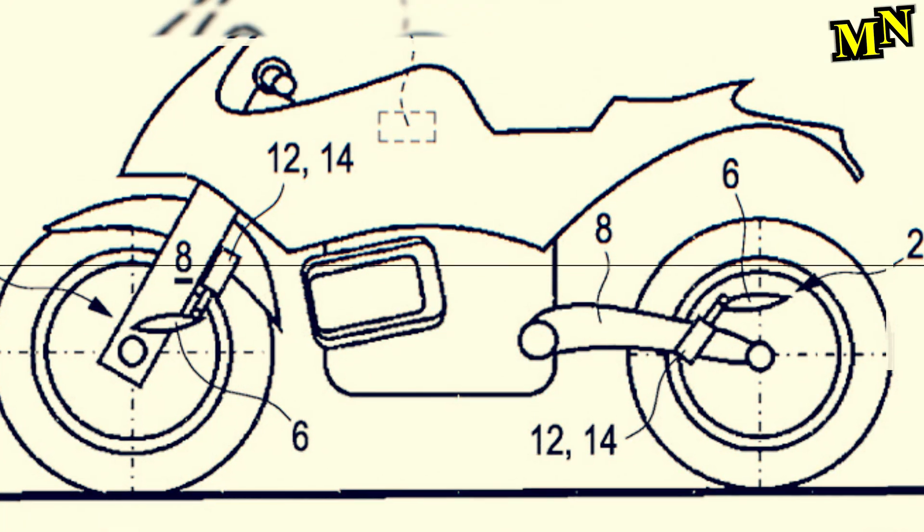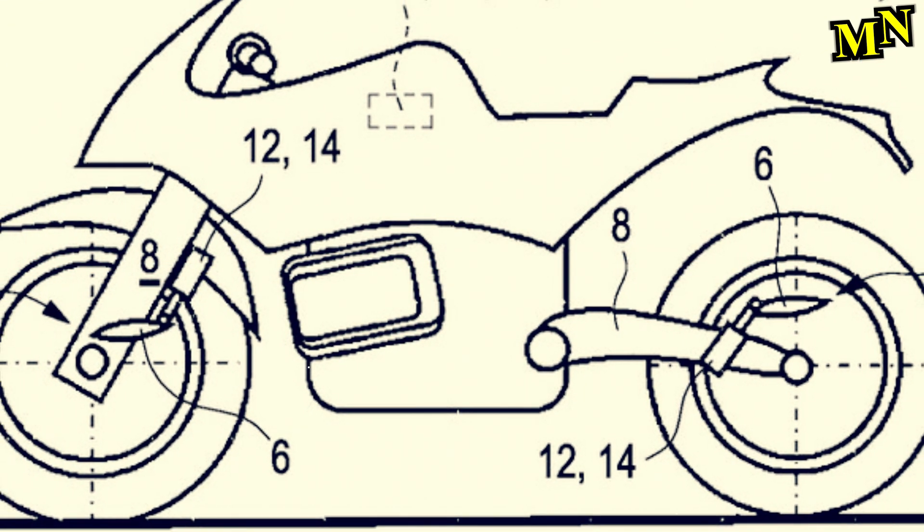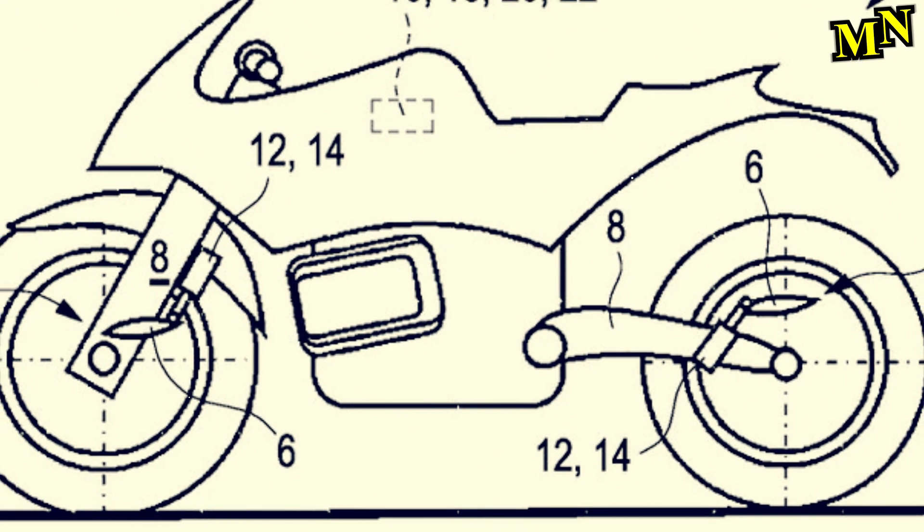However, it is important to note where the aerodynamic components are mounted. They were not integrated into the fairing, as is the case with current superbikes, but attached to the fork and swingarm.